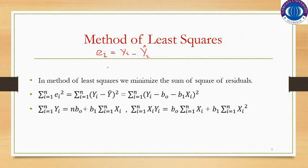So what we do for the method of least squares: we minimize the sum of squares of residuals, which is summation from i equal to 1 to n of e squared, which is equal to the summation of (yi minus y hat) whole squared. Since y hat is equal to b0 plus b1x, we substitute this value and minimize it by differentiating with respect to the unknown parameters.